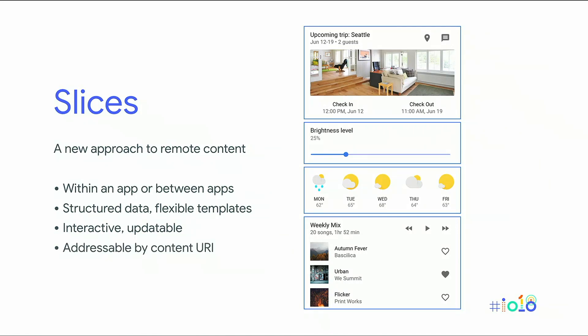Slices are addressable by content URI, and this is how they're passed around the system and passed along to app indexing to be shown in context like search. Slices is entirely inside the support library — it's entirely in Jetpack — so it's backwards compatible. You can use slices all the way back to API 19.